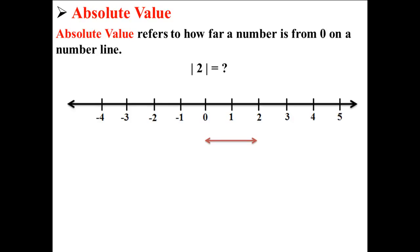Here we put 2 on a number line and we can see that 2 is 2 points away from 0. So the absolute value of 2 is 2.